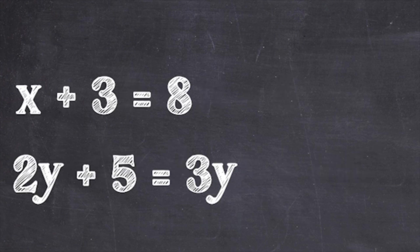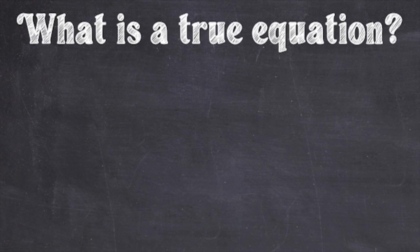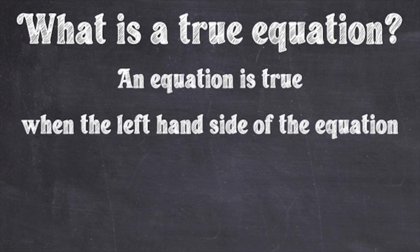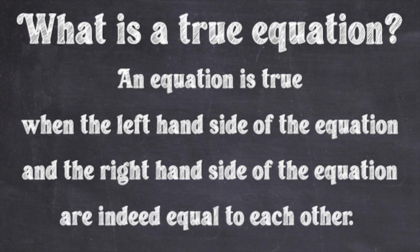Remember variables? The equations we are going to focus on in this video will all have exactly one variable present on either side of the equation or both sides of the equation. We'll get to these kinds of equations later, but first we need to explain what it means for an equation to be true. We say that an equation is true when the left-hand side and the right-hand side are indeed equal to each other.